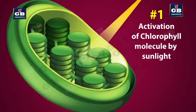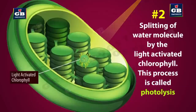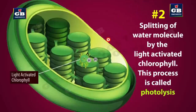Step 1: Chloroplasts have a green pigment called chlorophyll. This chlorophyll molecule gets activated by sunlight. Step 2: This light-activated chlorophyll splits the water molecules into hydrogen and oxygen.